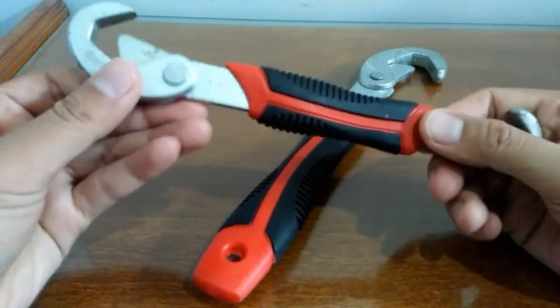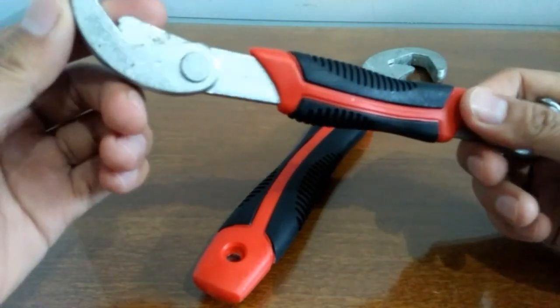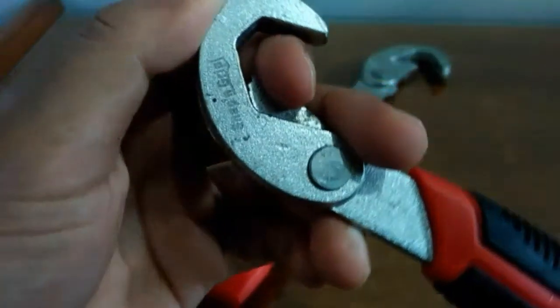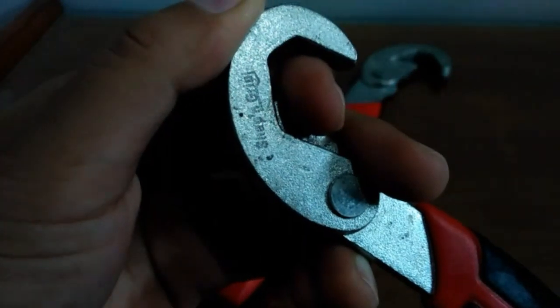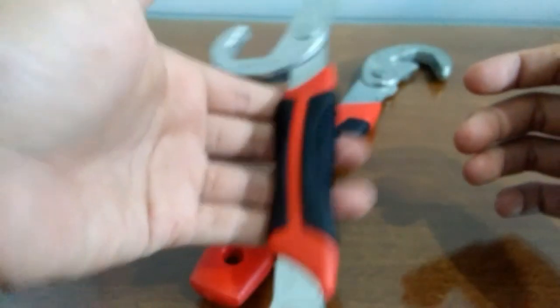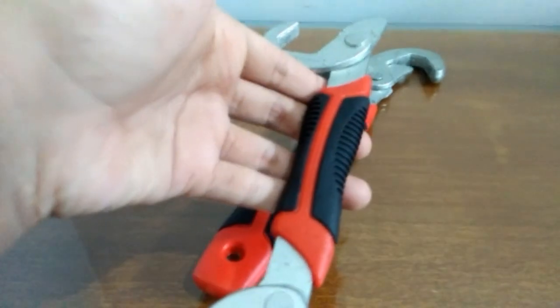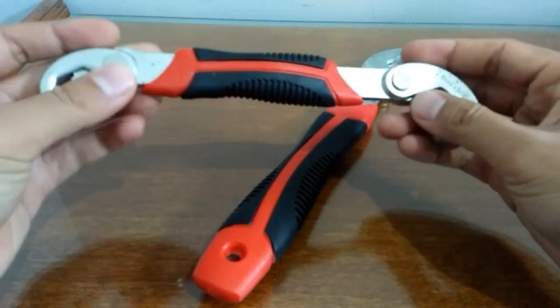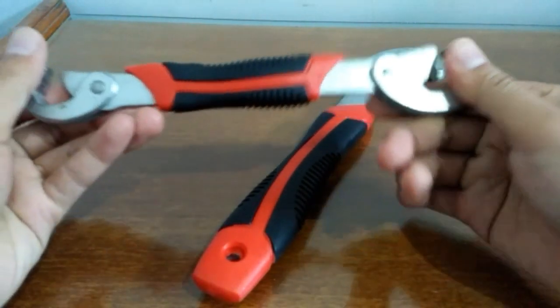Ini kayak gantinya kunci inggris. Ini ada tulisannya snap and grip, sudah enggak kelihatan ya. Ini masih kelihatan ya. Tapi enggak tahu ini asli atau palsu. Kalau menurut saya sih ya lumayan bagus lah. Ini kalau saya biasanya untuk membuka keran.